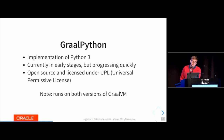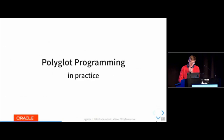GraalPython is another language implemented on top of GraalVM. It's an implementation of Python 3, currently in early stages — the implementation started at the beginning of this year — but it's progressing quickly because we've been implementing many other languages on top of GraalVM already and have quite some experience. It's open source and runs on both versions of GraalVM.